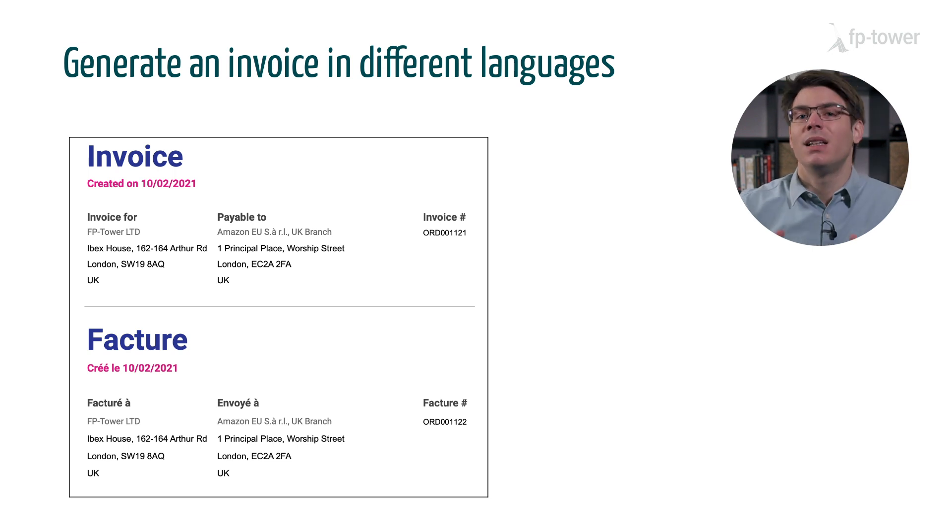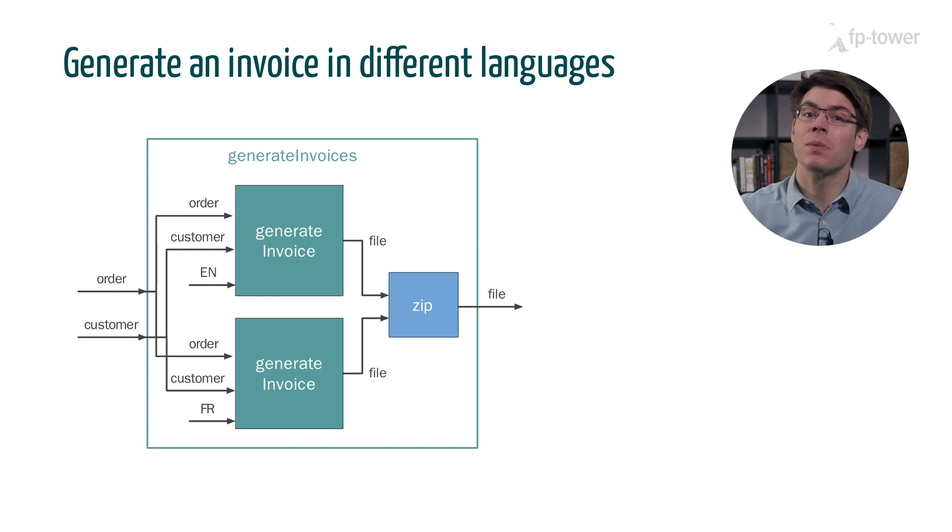This bug may not seem dramatic, but it might cause some issues for our payment department because customers will only pay one of the two invoices. For example, suppose a customer makes a bank transfer using the French invoice number. In that case, the English invoice will eventually be marked as overdue. Anyway, the most important takeaway is that actions make it difficult to build complex functions from simpler ones. In this example, generate invoice in English impacts the behavior of generate invoice in French. But if we look at the diagram, there is no arrow connecting these two functions.